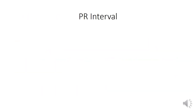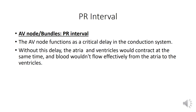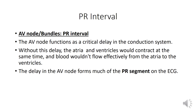Let us discuss about the PR interval, or AV node bundles. The AV node functions as a critical delay in the conduction system. Without this delay, the atria and ventricle would contract at the same time and blood would not flow effectively from the atria to the ventricles. The delay in the AV node forms much of the PR segment on the ECG.